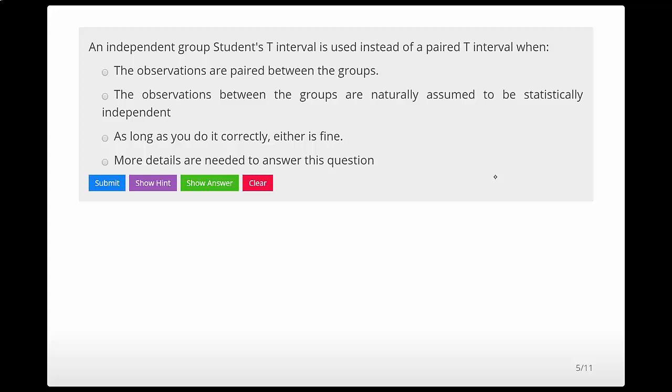If our observations are paired, then we're going to do a paired t-test. And if our observations come from groups that are naturally assumed to be independent, then it's going to be an independent group t-test.